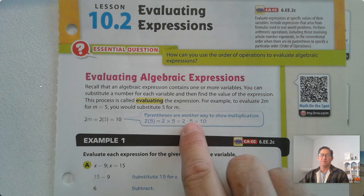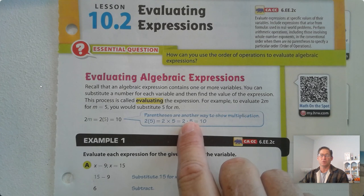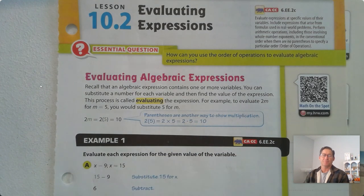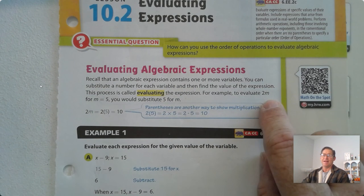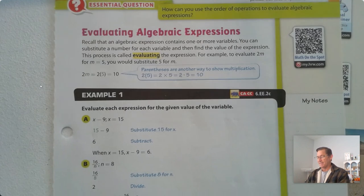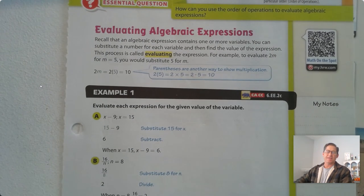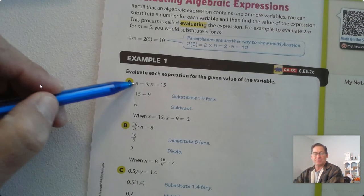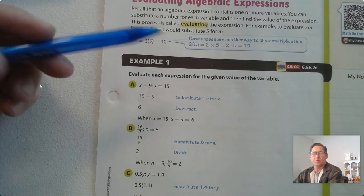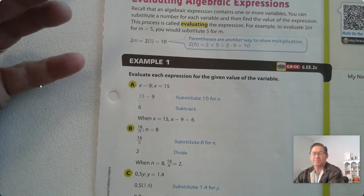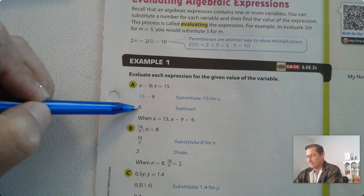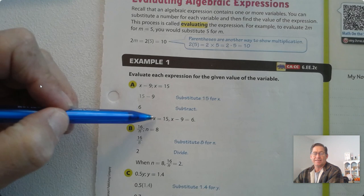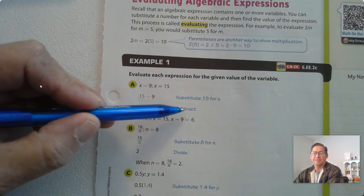You can also write the times sign in between, or write it with a dot, a multiplication symbol. So 2 times 5 is 10. When m is 5, this expression is 10. All right, so let's look at some examples. Evaluate each expression for the given value of the variable. We have the expression x minus 9, and we want to evaluate when x equals 15. Substitute 15 for x, and 15 take away 9 gives us 6. So when x equals 15, x minus 9 is 6.